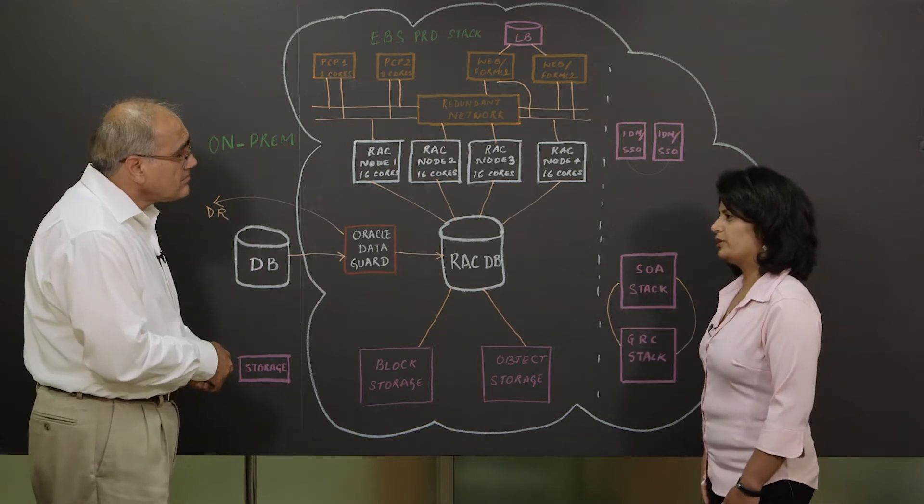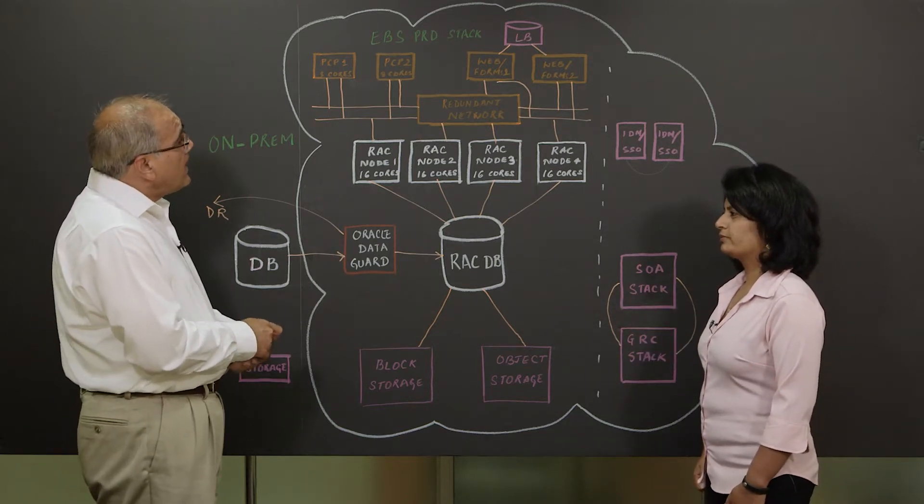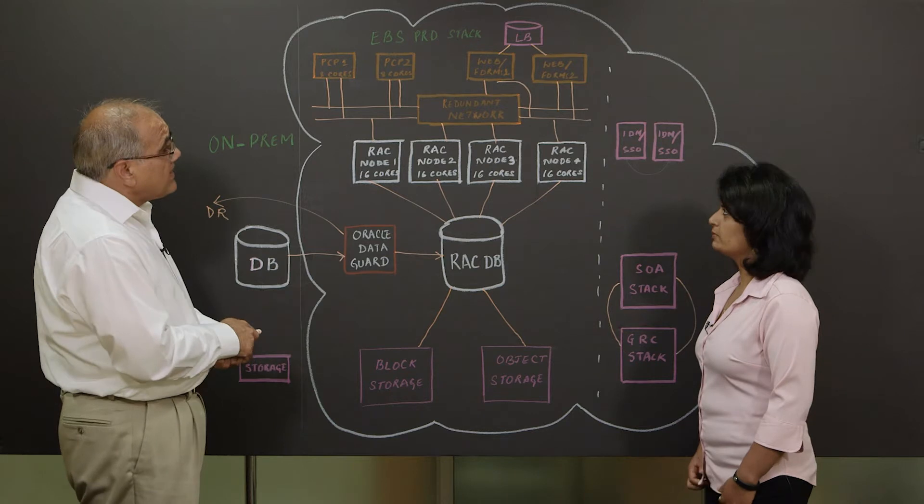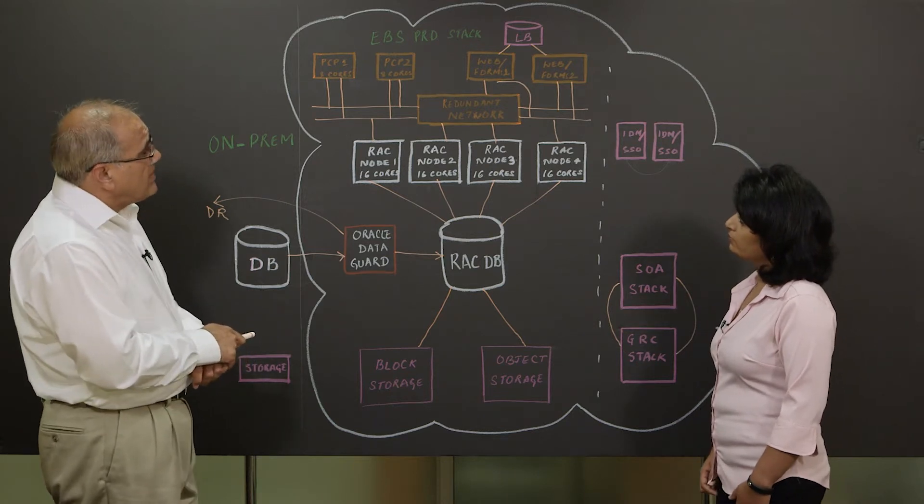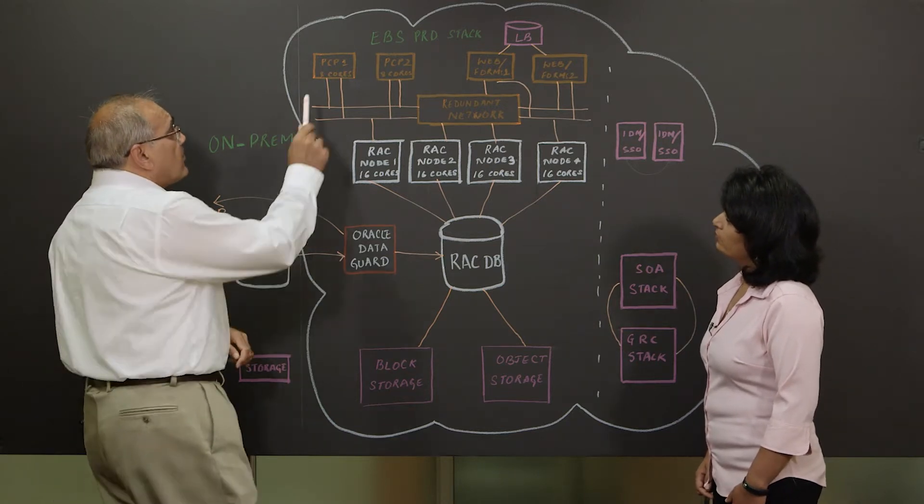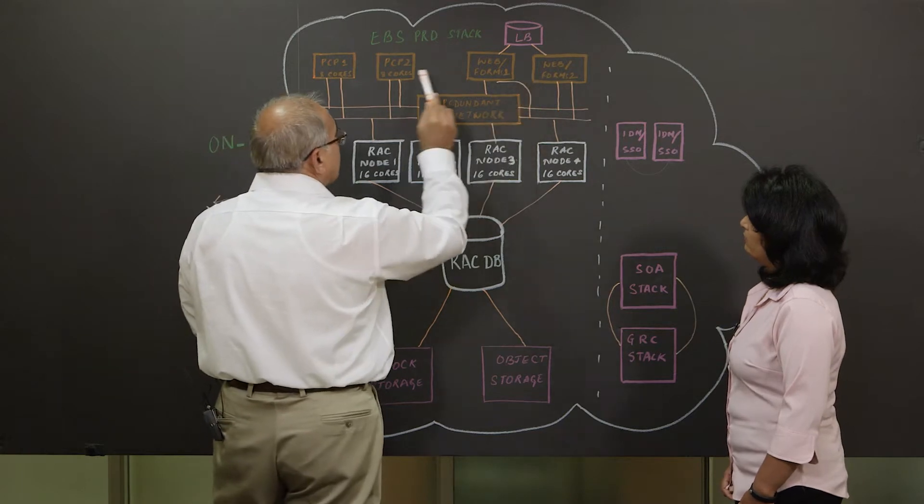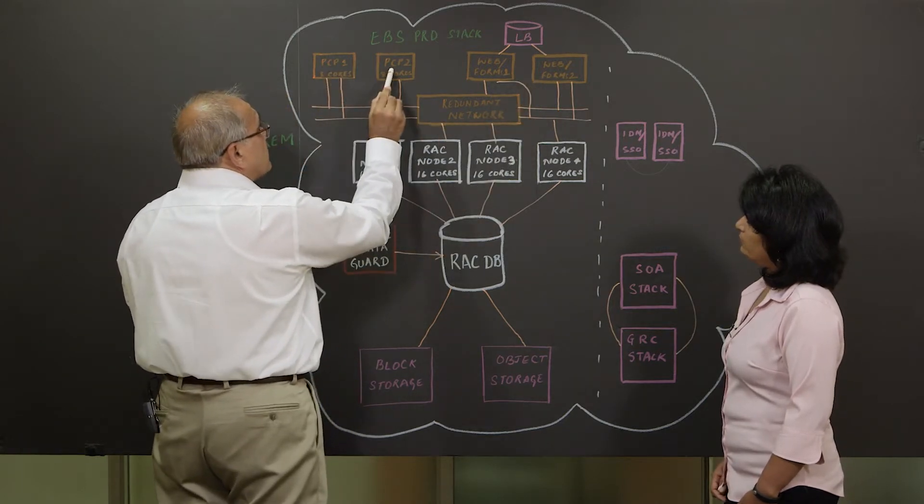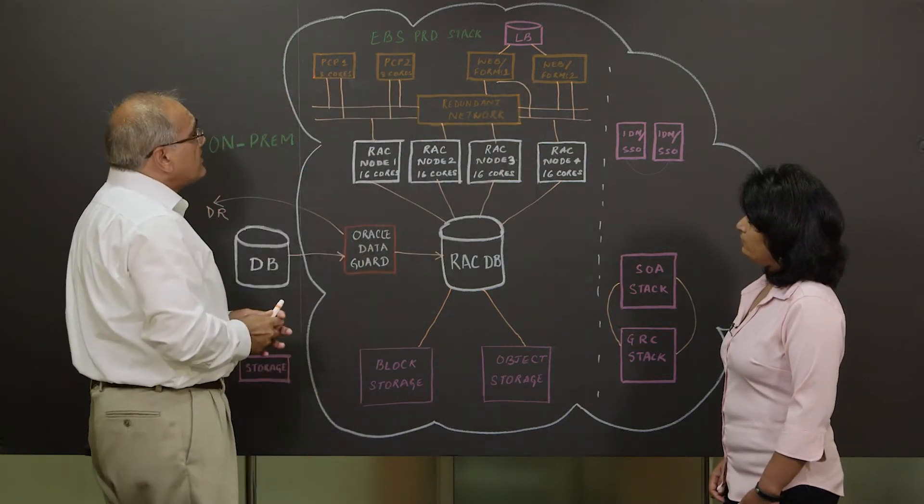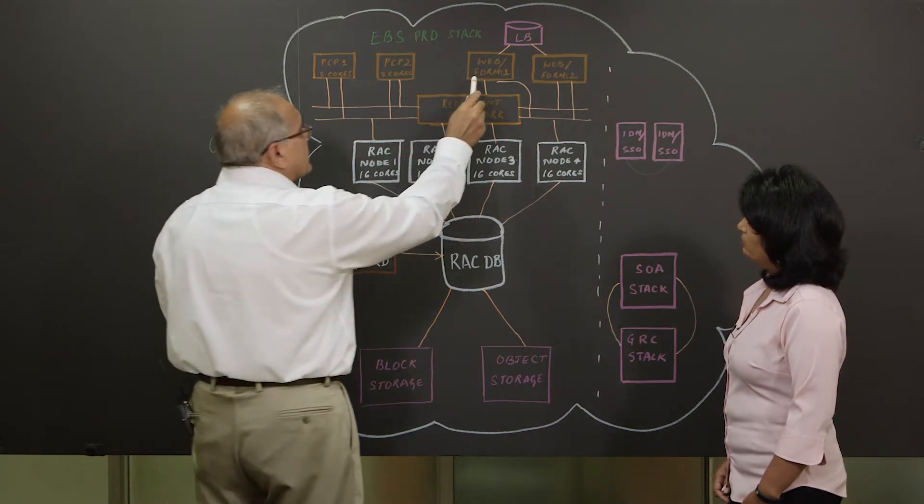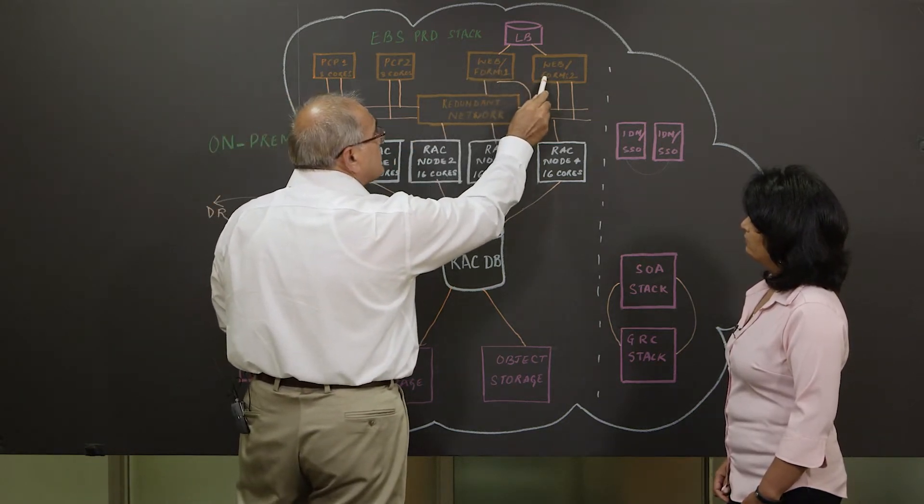And how many servers are we talking about over here? We had altogether eight servers participating in this EBS architecture. Four of them were application tier nodes. Two of them were responsible for parallel concurrent processing, and the other two were supporting web and form services.